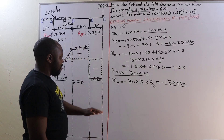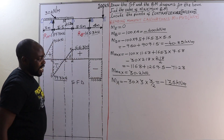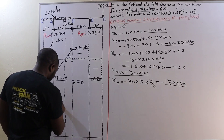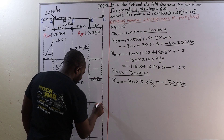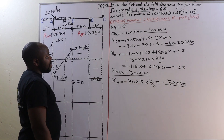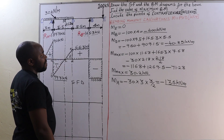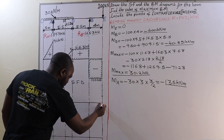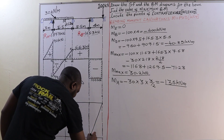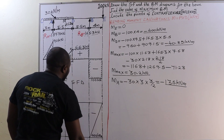We now have the bending moments at all the points on our beam. We are going to use those bending moment calculations to plot the bending moment diagram below the shear force diagram. As usual, we start with a horizontal line representing the line of zero bending moment. Starting with the bending moment at E, which is zero, and the bending moment at B, which is negative 400, we connect those two points with a smooth slope.